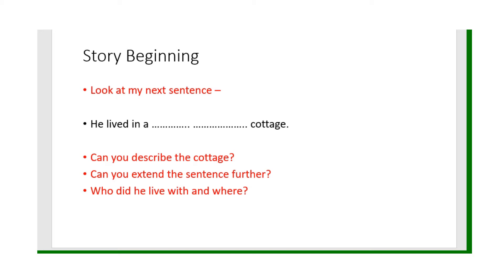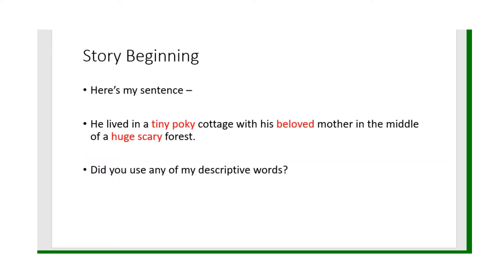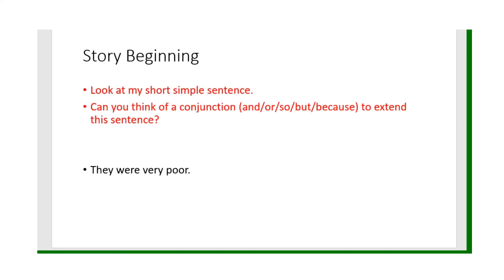Let's go on then. Look at my next sentence: 'He lived in a...' — what kind of cottage did he live in? Can you extend it further? Who did he live with and where did he live? He lived with his mother, didn't he, and they lived in the woods. Look — 'He lived in a tiny pokey cottage with his beloved mother in the middle of a huge scary forest.' Did you use any of my descriptive words? That sentence is better than just 'he lived in a cottage.'